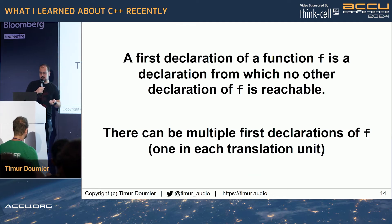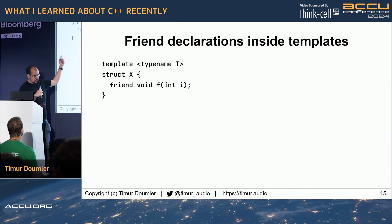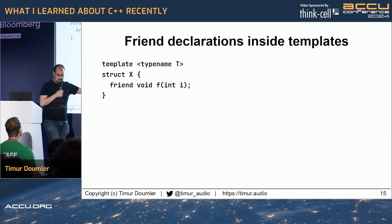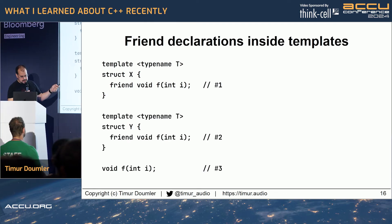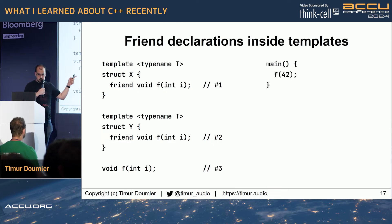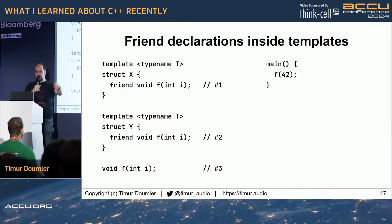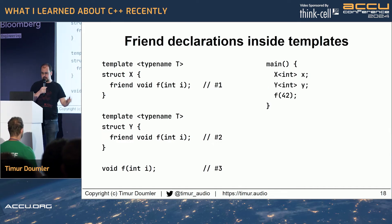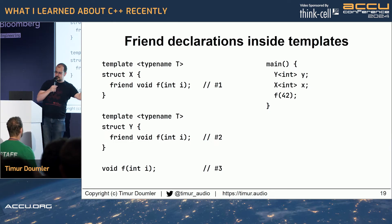This also means you can have multiple first declarations — each translation unit has its own. And if you have a declaration inside a template, it's not reachable until you instantiate the template. So if you have a function f declared in template x, in template y, and also on its own, and then you call that function — which is the first declaration of f? Three. Now you instantiate x, instantiate y, then call f — what is the first declaration now? One. And if you flip the order in which you instantiate these completely unrelated templates, the first declaration becomes two.